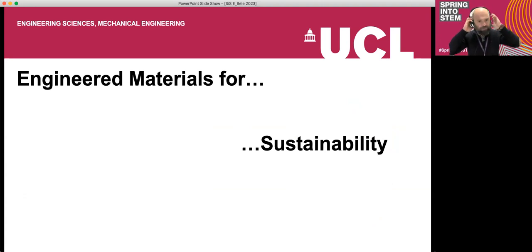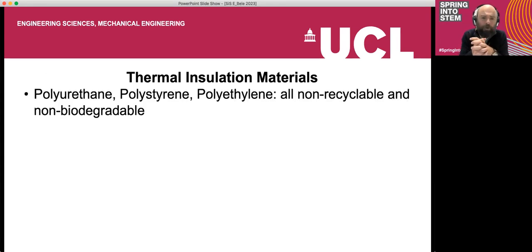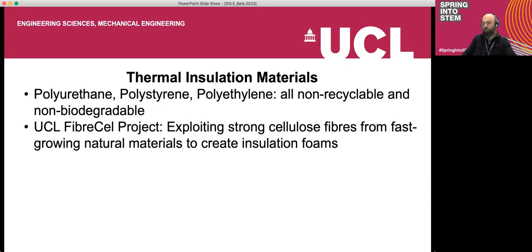Another class of material - the final example - is engineering materials for sustainability. This is part of my research, looking at all these foams used for insulation: polystyrene, polyethylene, polyurethane. All are extremely good at protecting us from cold and hot weather outside but they are not recyclable and not biodegradable. We've been looking for a long time for something sustainable that can replace them. This is a project we work on at the moment.